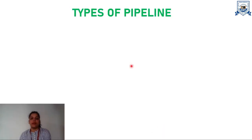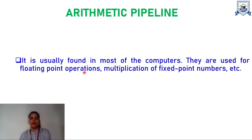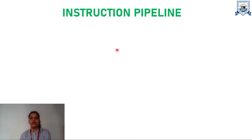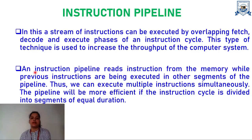There are two types of pipelining: first is arithmetic pipelining and second is instruction pipelining. Arithmetic pipelining is usually found in most computers and is used for floating point operations, multiplication of fixed point numbers, etc. In the case of instruction pipelining, a stream of instructions can be executed by overlapping fetch, decode, and execute phases of the instruction cycle. This technique is used to increase the throughput of the computer system. An instruction pipeline fetches the instruction from memory while the previous instructions are being executed in other segments of the pipeline, thus allowing execution of multiple instructions simultaneously.